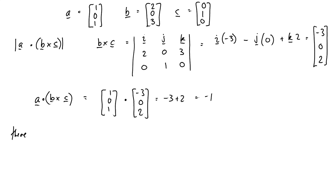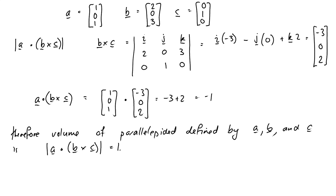So, the volume of parallelepiped, defined by A, B, and C, is absolute value of A dot B cross C, which is simply equal to 1. So that wasn't so bad.